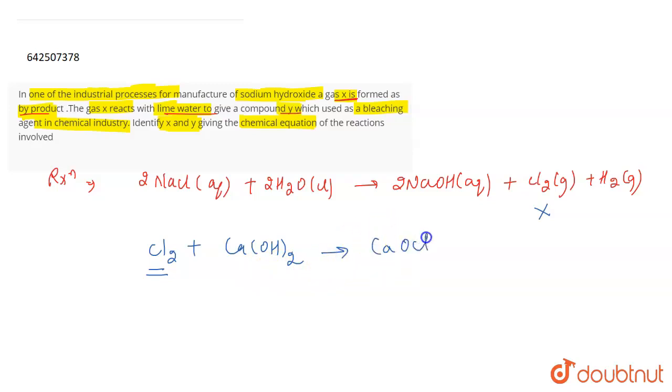That compound is CaOCl2, which is bleaching powder. Water is also formed along with it.